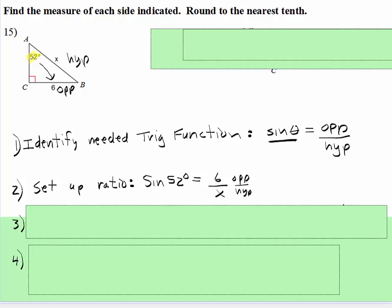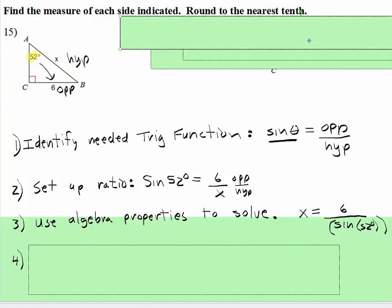Now you're just going to use your algebra skills to solve. There's a couple things that you could have done. You could have crossed multiple, could have canceled by multiplying by x. Then you would just simply divide both sides by sine of 52, which is what I did over here. When you divide this side, you're going to get x is equal to 6 divide the sine 52, which is what we have right here.